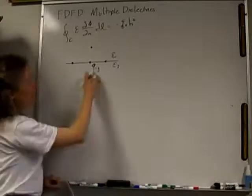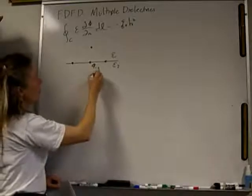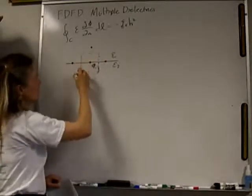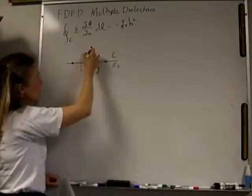I'm going to put a contour around my phi IJ point. I'm going to center it between all of my other points. The reason I'm going to do that is because I want to use the central difference formula in this integration. So here is my contour.